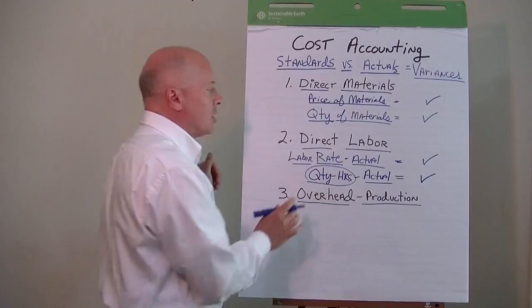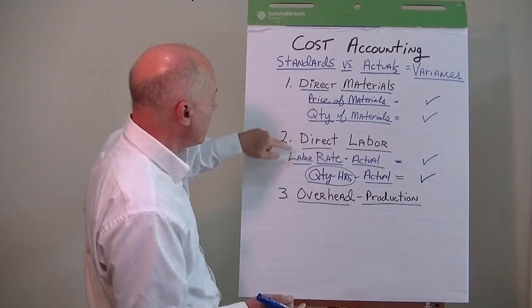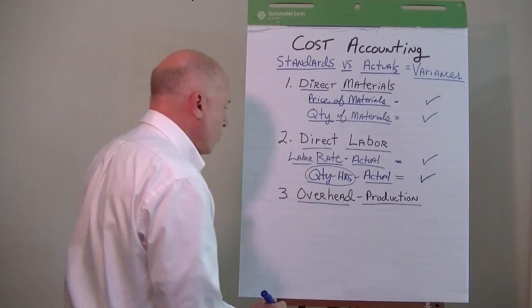So we have four variances: the direct materials price variance and direct materials quantity variance, and the direct labor rate variance and the direct labor quantity variance. And then finally, under overhead, we can divide overhead further.